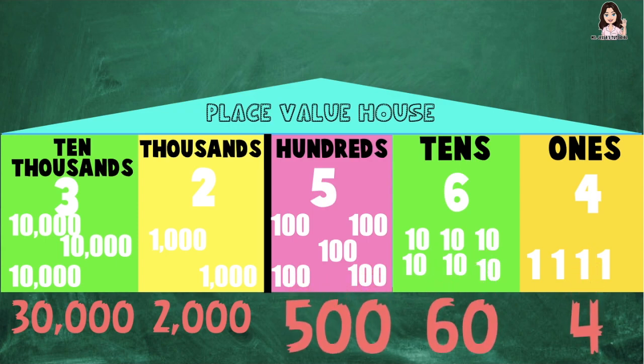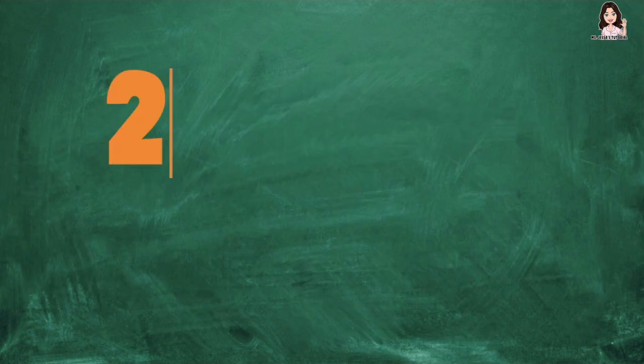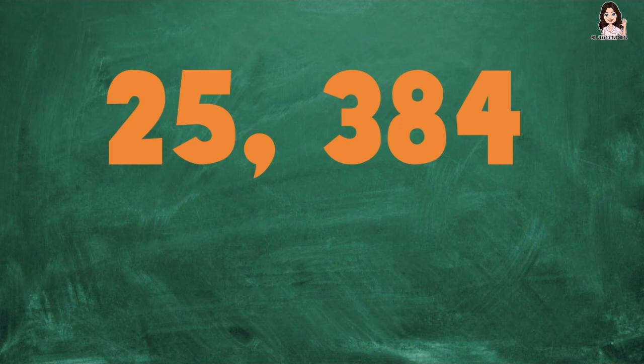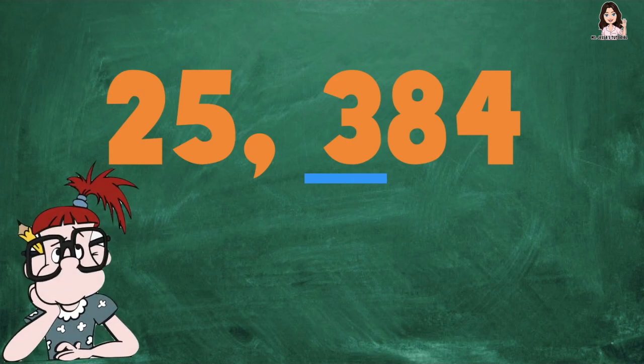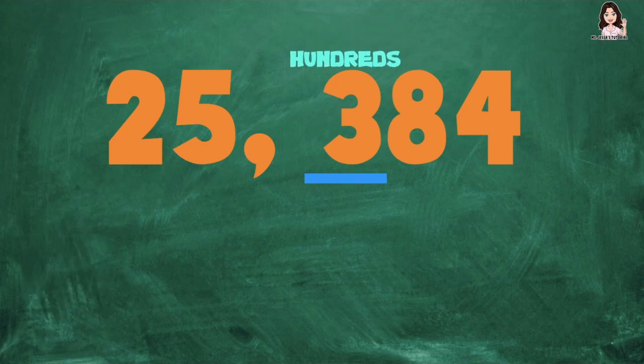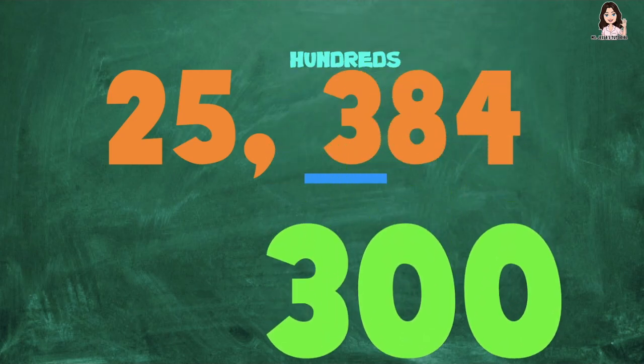So let's have more examples. I have here 25,384. What is the value of digit 3? Since digit 3 is at the hundreds place, what do you think is the value? That's correct — the value is 300.